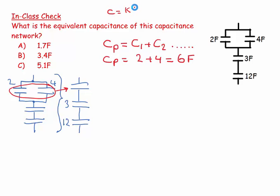to K times epsilon naught A over D, if I increase the area, my capacitor must be bigger, and so I need to get a bigger number here.